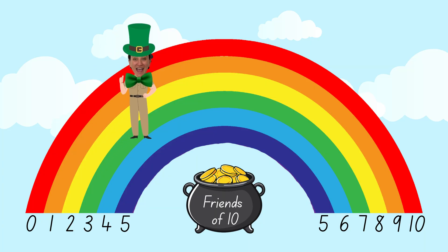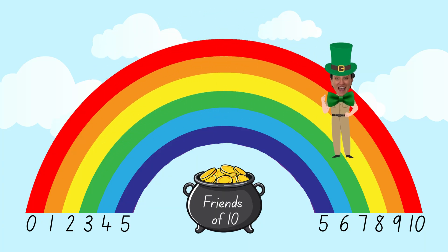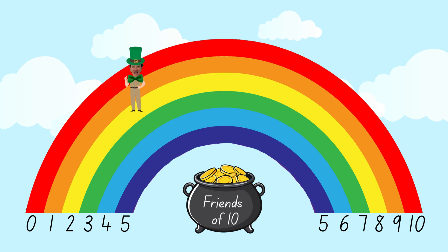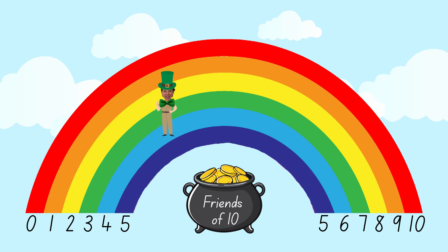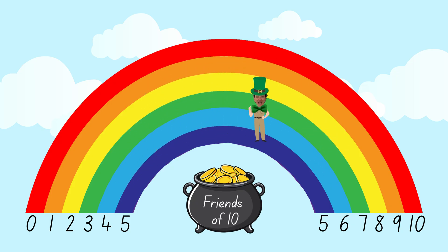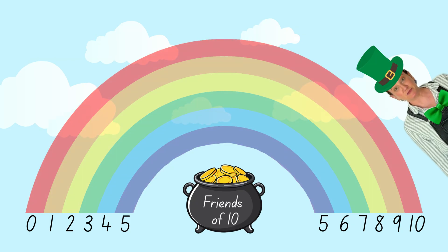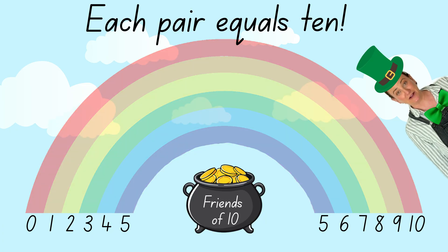I have a colourful way of remembering the Friends of Ten with the Friends of Ten rainbow. Did somebody say rainbow? I'm a leprechaun and we know all about rainbows. I'll take it from here. Each colour of the rainbow joins two numbers that make ten: one and nine make ten, two and eight make ten, three and seven make ten, four and six make ten, five and five make ten. Each pair is connected. Each pair equals ten.